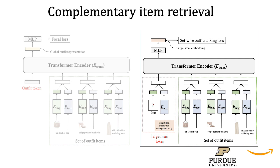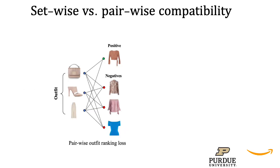For retrieval, we first pre-train the network on the compatibility prediction task and then fine-tune using a proposed set-wise ranking loss. We have observed that pre-training improves retrieval performance significantly.